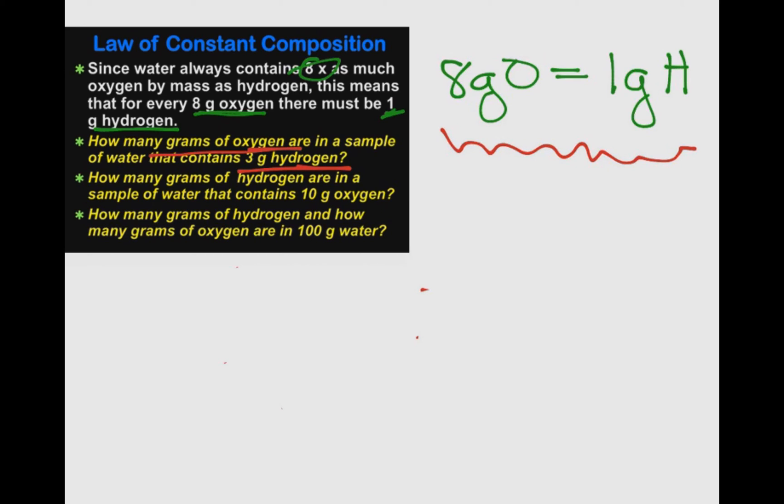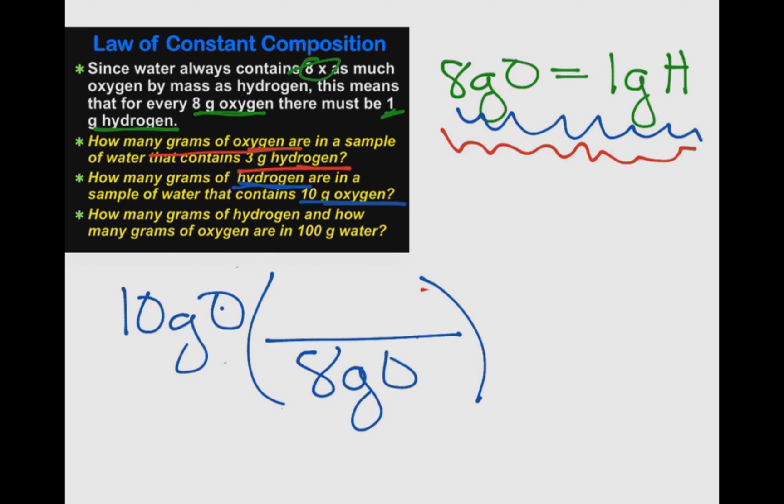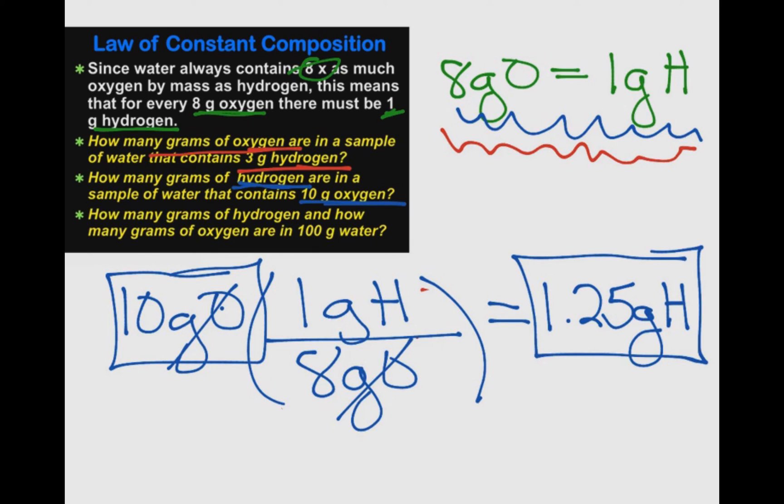Let's now solve problem number 2. How many grams of hydrogen are in a sample of water that contains 10 grams of oxygen? To solve any problem in chemistry, the first thing we write down is the given: 10 grams of oxygen. Then comes our ratio. We're going to get it from our information up here: 8 grams of oxygen is equal to 1 gram of hydrogen. Since oxygen is on the top, we're going to put our 8 grams of oxygen on the bottom, 1 gram of hydrogen. My oxygen cancels out, and I get an answer of 1.25 grams of hydrogen. That means if I have 10 grams of oxygen, I will have 1.25 grams of hydrogen.